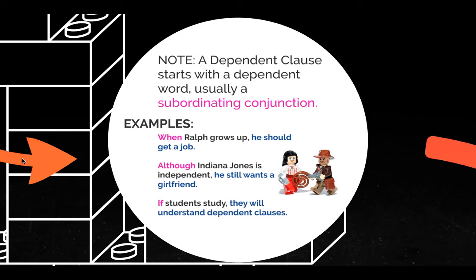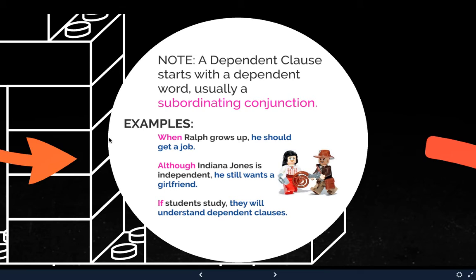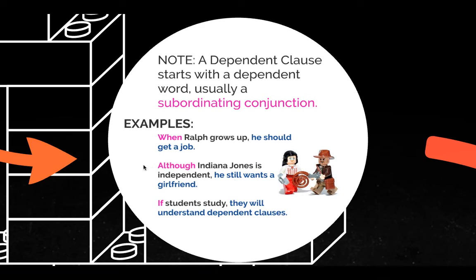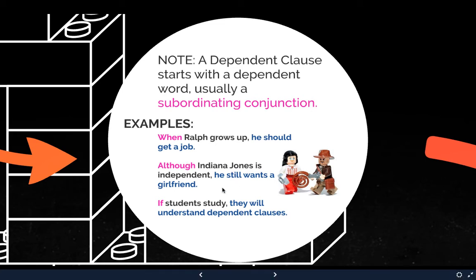Notice these sentences — these are examples of complex sentences with dependent clauses. Look at the first part: 'When Ralph grows up.' 'When' is a subordinating conjunction. 'When Ralph grows up, he should get a job.' That is a complex sentence. 'Although Indiana Jones is independent, he still wants a girlfriend.' 'Although' is a subordinating conjunction. 'Although Indiana Jones is independent' is a dependent clause, and the whole sentence — 'Although Indiana Jones is independent, he still wants a girlfriend' — is a complex sentence.